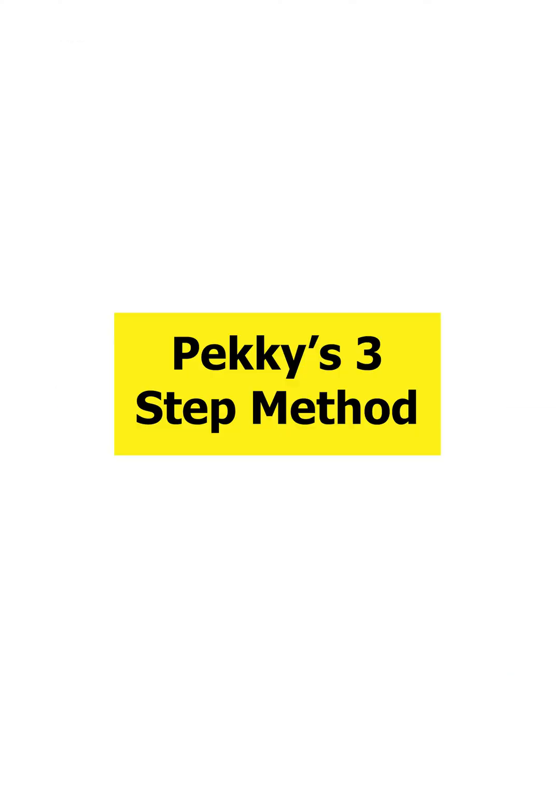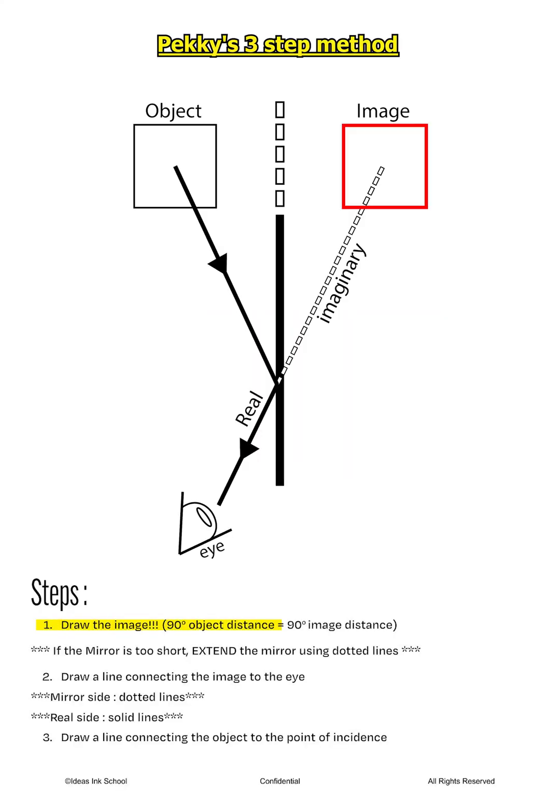Now we shall learn how to easily sketch a ray diagram. Let's learn the Peck three-step method. Step one, always draw the image first. Take note that if the object is found outside the mirror, we can extend an imaginary mirror to accommodate it. The purpose of this line is to help us measure the object and image distance which are perpendicular to the mirror.